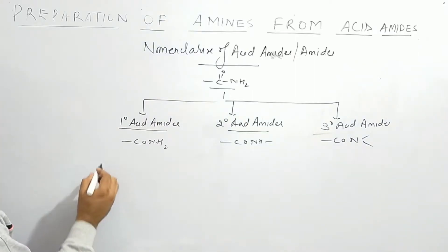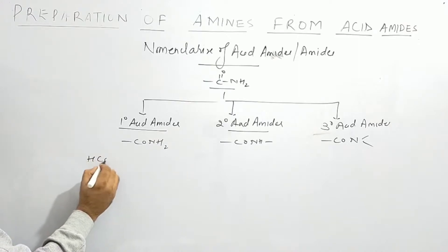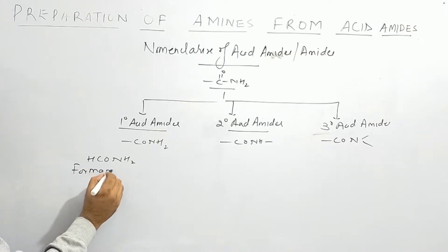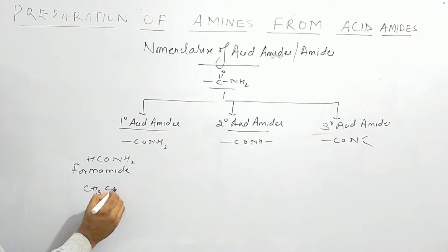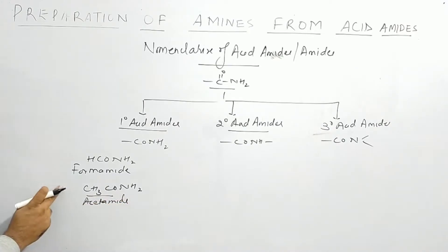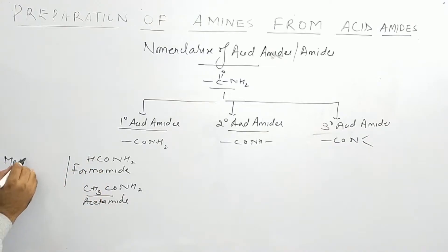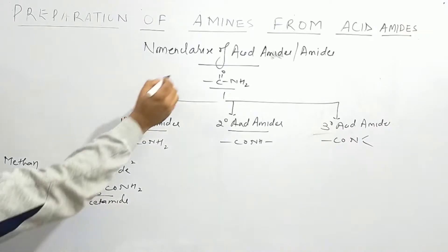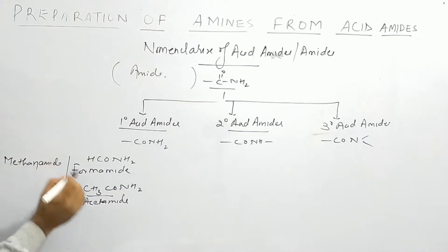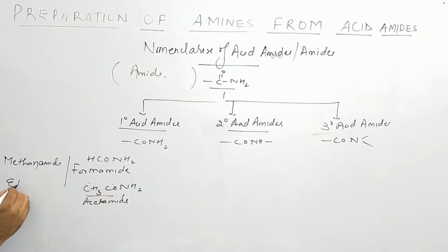Now see the nomenclature, starting with primary amides. H-CoNH2 is the first amide with one carbon — common name is Formamide. CH3-CoNH2 has two carbons — common name is Acetamide. For the IUPAC name of formamide: one carbon gives us Methane Amide. Similarly, the two-carbon chain gives Ethane Amide.